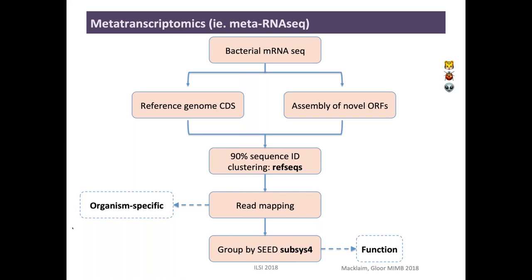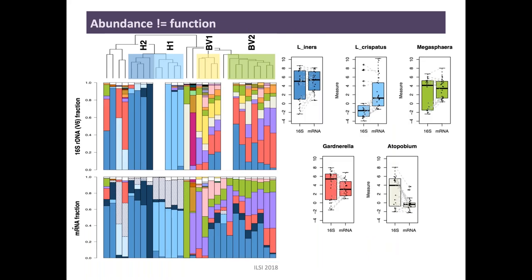What we did was metatranscriptomics — bacterial mRNA-seq. We collected samples, purified bacterial mRNA, and sequenced heavily. We then did two things with the reads: we aligned them to reference genomes of organisms that should be in the vagina, and anything that didn't match we assembled. We merged these two datasets into reference sequences — sequences that are 90% identical regardless of whether they were assembled or referenced. Mapping the reads back to those reference sequences, we can infer which organisms those reads belong to, or group them into functions — for example, all genes from any organism that encode glucose-6-phosphate dehydrogenase get grouped down to one enzymatic function.